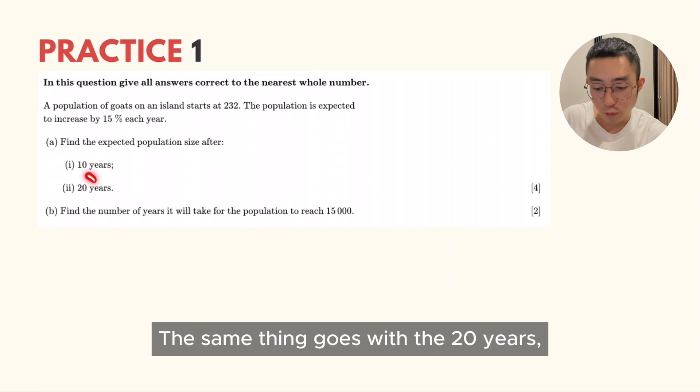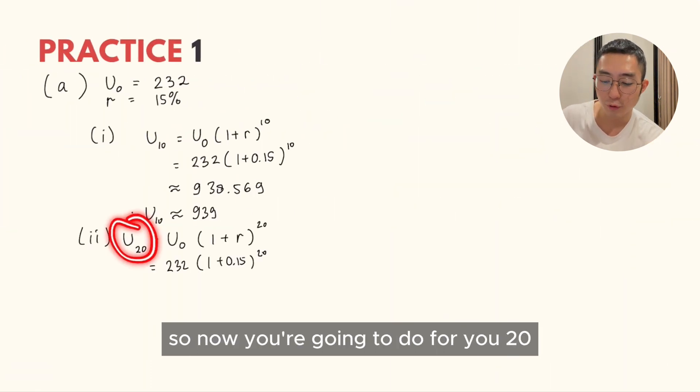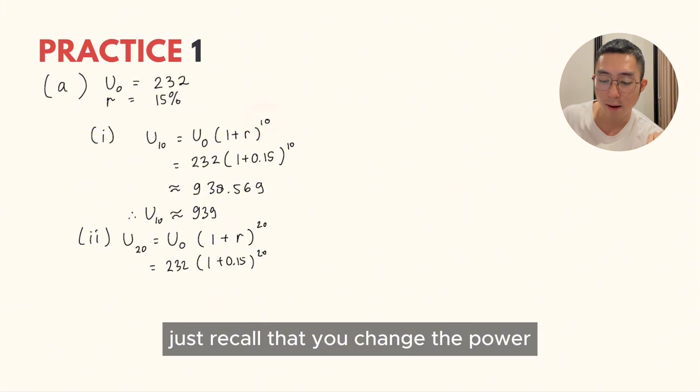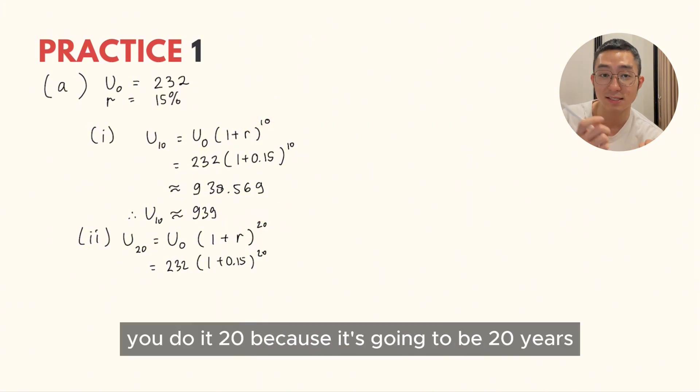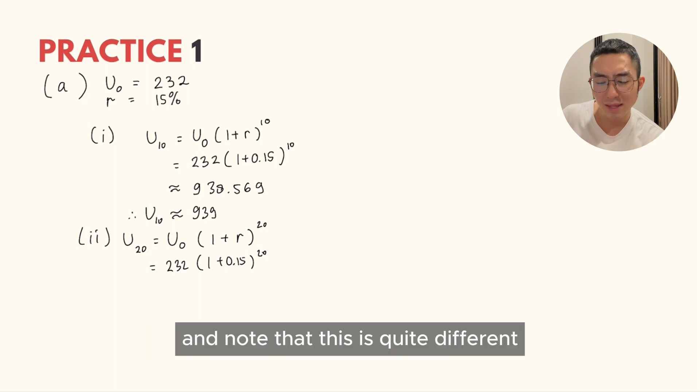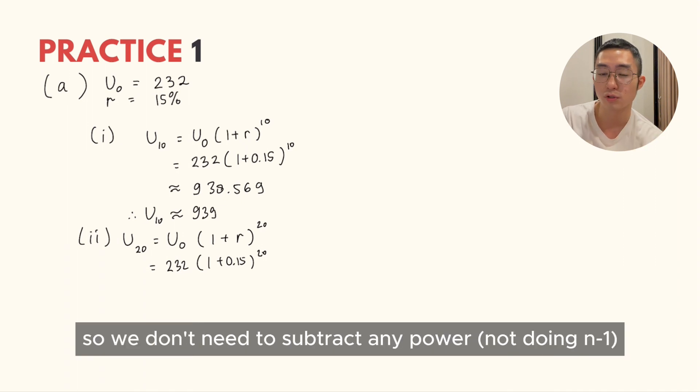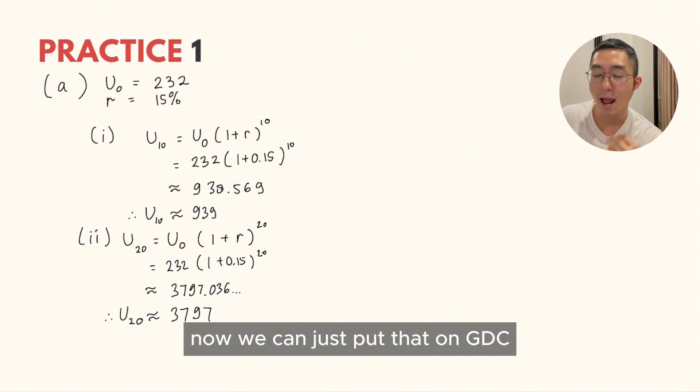The same thing goes with the 20 years. Now you are going to do for U20. Just recall that you changed the power. Instead of 10 times, you do 20 because it is going to be 20 years. Note that this is quite different. We are not using U1, we are using U0, like the initial, we set that as U0. So we don't need to subtract any power. Put that on GDC and we will get that it is 3797.